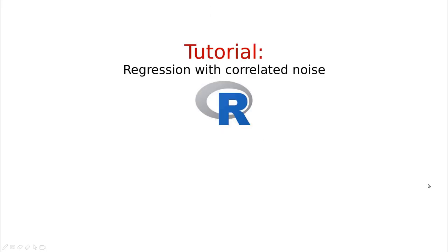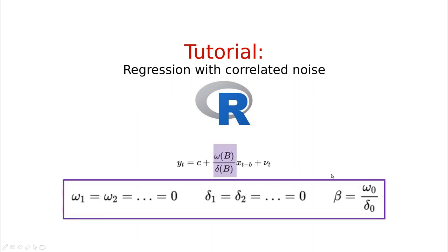Let's stop and do a tutorial. First, we'll focus on the simplest example where omega and delta reduce to just constants — all higher-order terms are zero — and define beta in the traditional sense as omega_0 divided by delta_0.